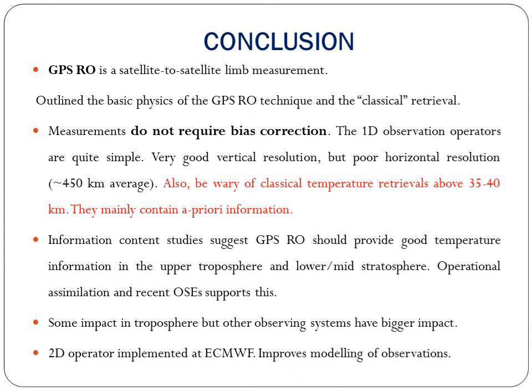In conclusion, GPSRO is a satellite-to-satellite limb measurement. The basic physics of the GPSRO technique and the classical retrieval are based upon these measurements. The measurements do not require bias correction. One-dimensional observation operators are quite simple, with very good vertical resolution but poor horizontal resolution. One should be wary of classical temperature retrievals above 35 to 40 km as they mainly contain a priori information. Studies suggest GPSRO should provide good temperature information in the upper troposphere and lower to middle stratosphere. Some impact exists in the troposphere, but other observing systems have bigger impact. The 2D operational implementation at ECMWF improves modeling of observations.